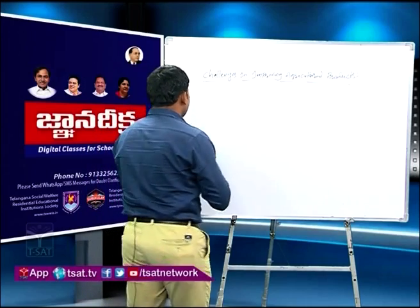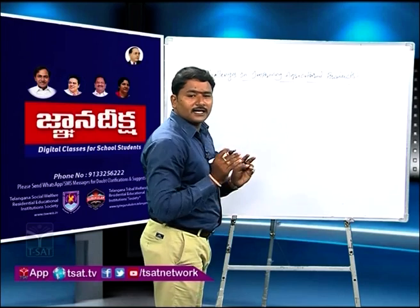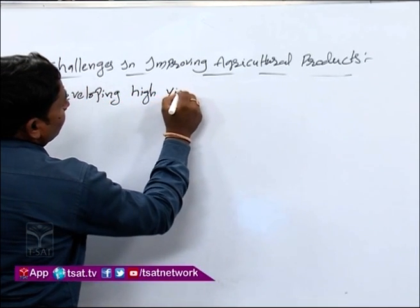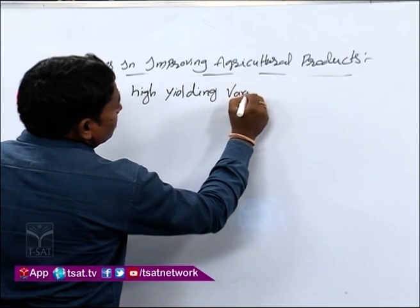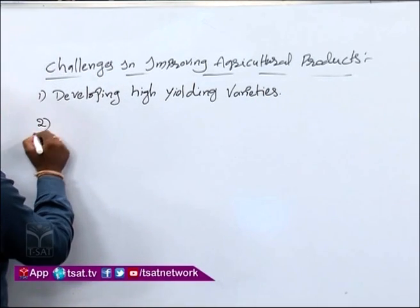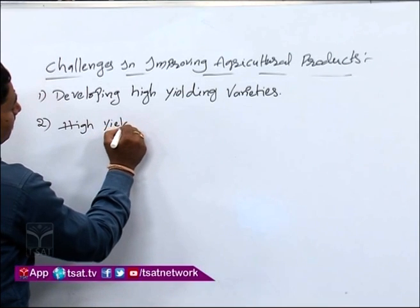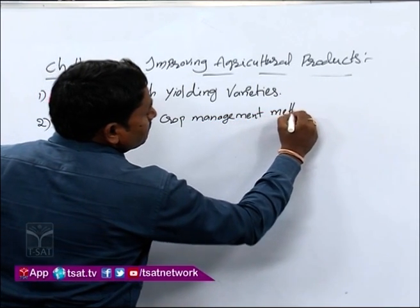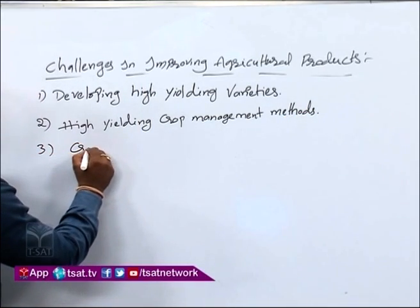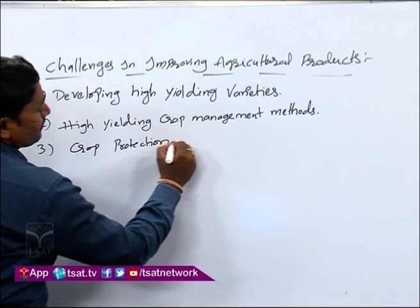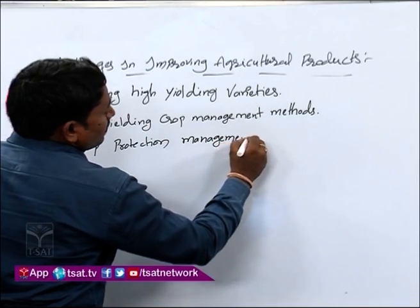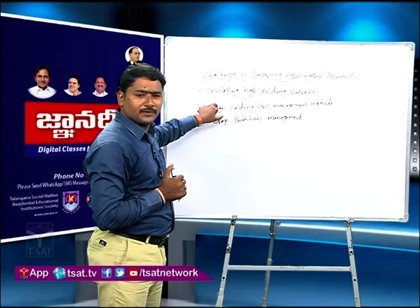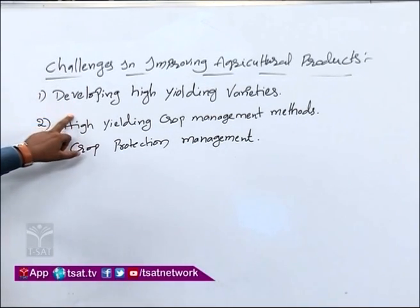Let us see what are the three methods used for increasing agricultural production in India. First is developing high yielding varieties. Second is high yielding crop management methods. Third is crop protection management. These three methods help to improve agricultural production.